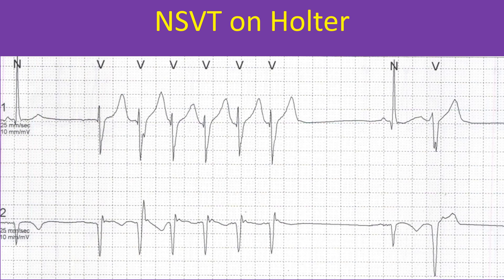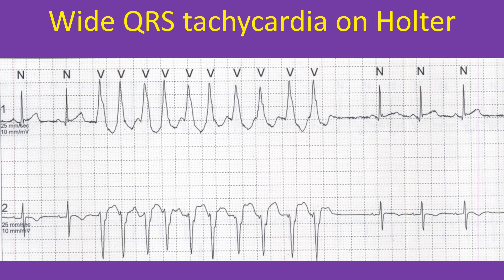The tachycardia is followed by a pause, then a sinus beat and a VPC. The clinical setting was a person with old inferior myocardial infarction with a chronic total occlusion of the right coronary artery. The arrhythmia could be arising from the region of the left ventricular scar.